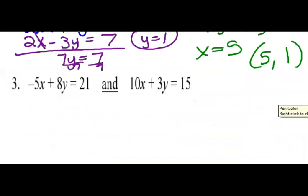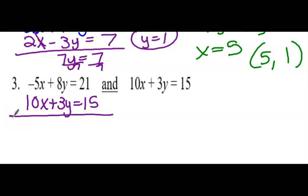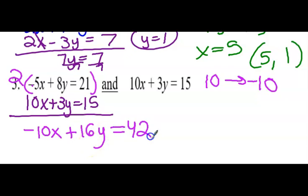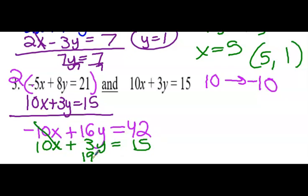Make up that game plan: how am I going to eliminate one of the variables? What is the opposite of 10? Well, that's negative 10. Can I change negative 5 to negative 10? Yes, by multiplying by 2. So that becomes negative 10x. I've got to do it to everything: 2 times 8y is 16y, and 2 times 21 is 42. I bring the other one down, notice I can eliminate the x's, combine the y's, and add from there — so 57. Solve for y, then plug it back in to find the x.